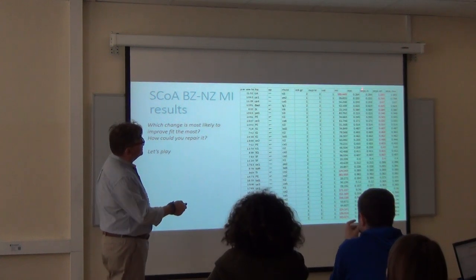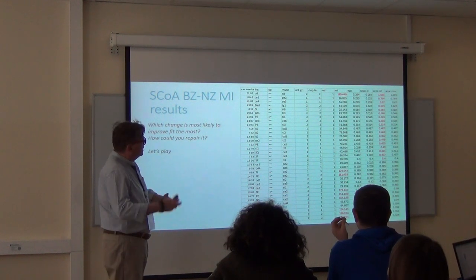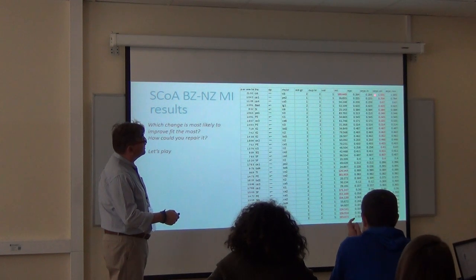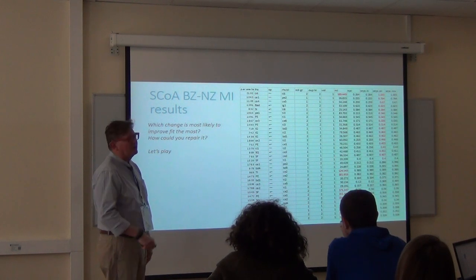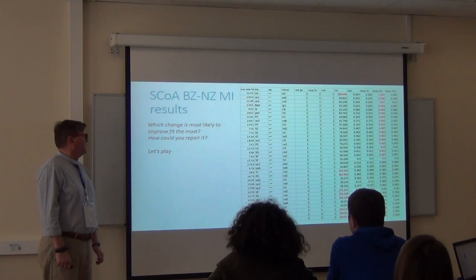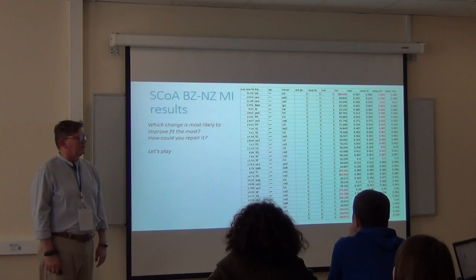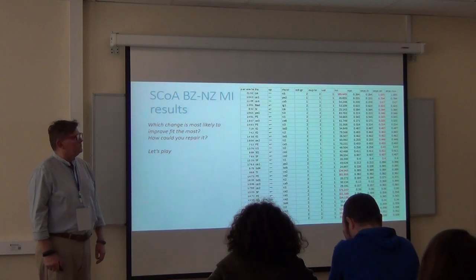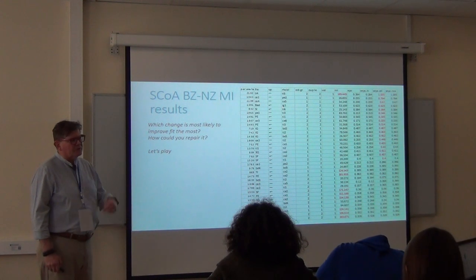Remember the MI and the standardized expected parameter change. Notice only one relationship comes out super strong and that's that TI4 is correlated with TI5. We saw that before yesterday. Maybe I should just kill one of those items and then rerun everything and see does my fit improve a lot. I wouldn't recommend adding that correlation, I'd recommend deleting the need for the correlation.